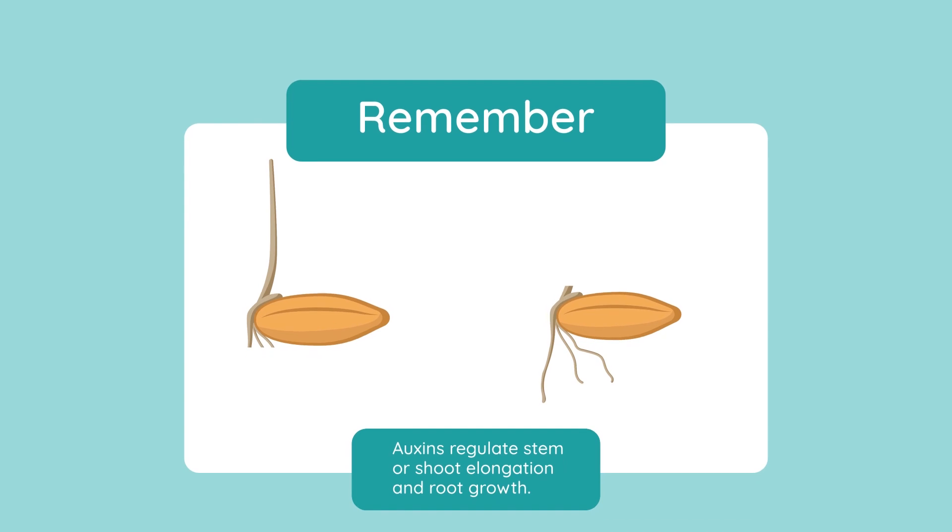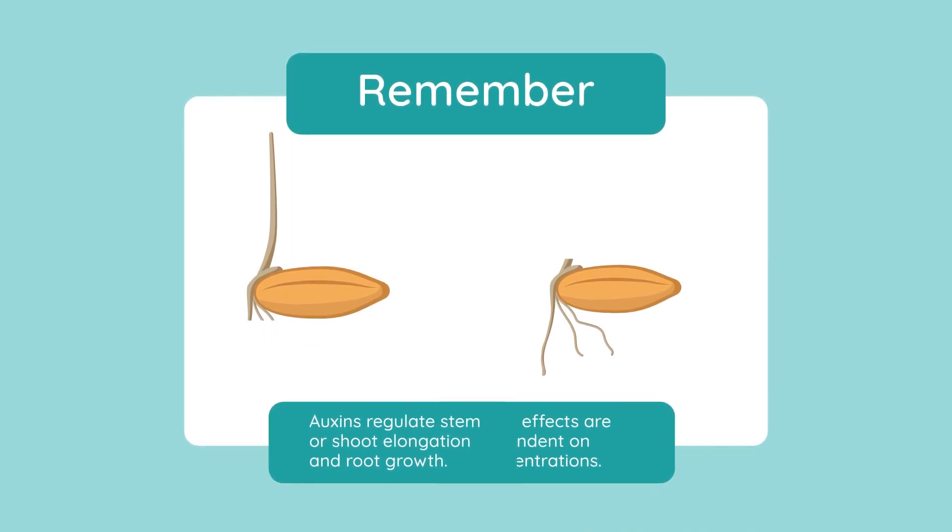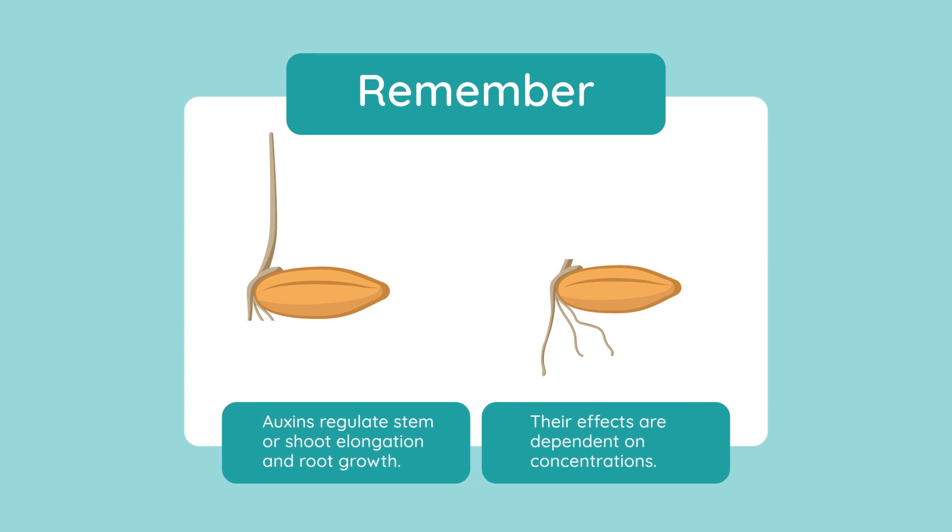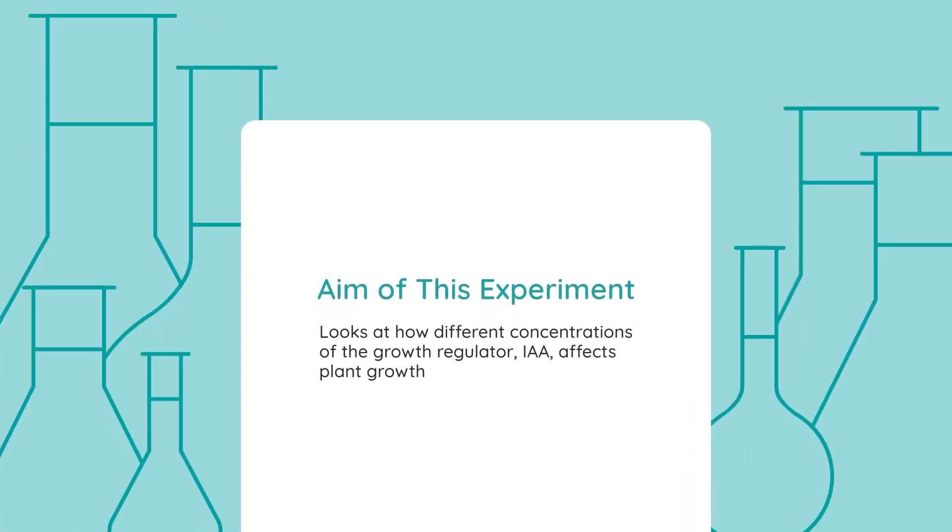We learned previously that plant auxins regulate stem or shoot elongation and also root growth. We also learned that their effects are dependent on concentrations. This experiment aims to look at how different concentrations of the growth regulator indole acetic acid, or IAA, affects plant growth.